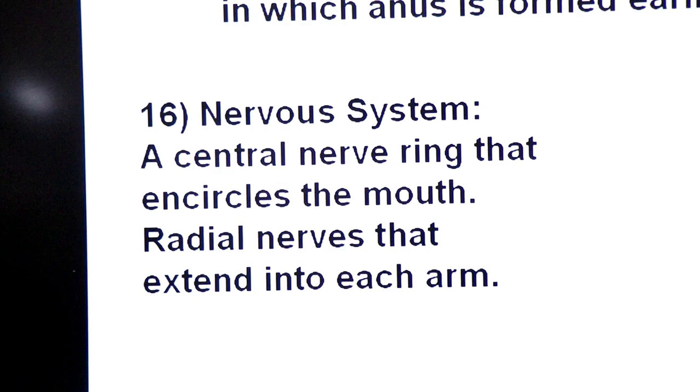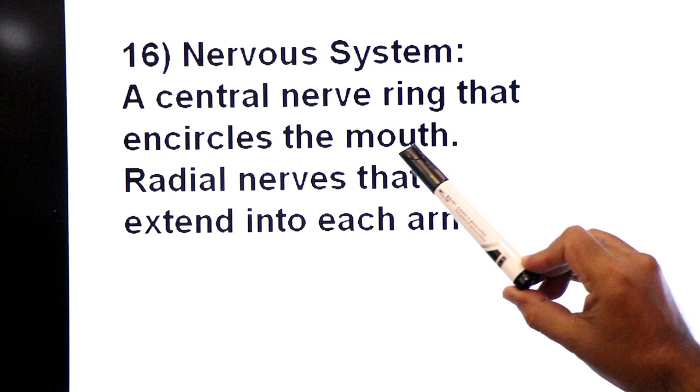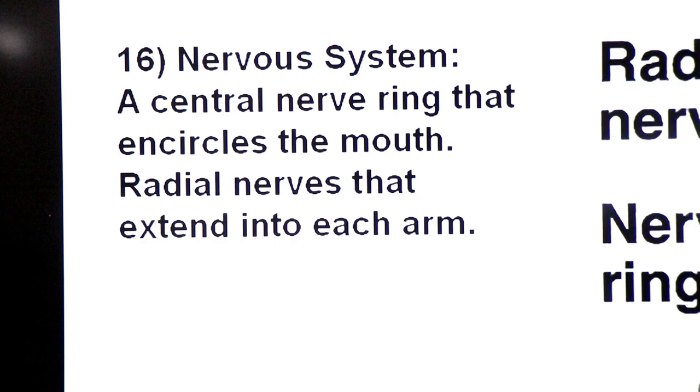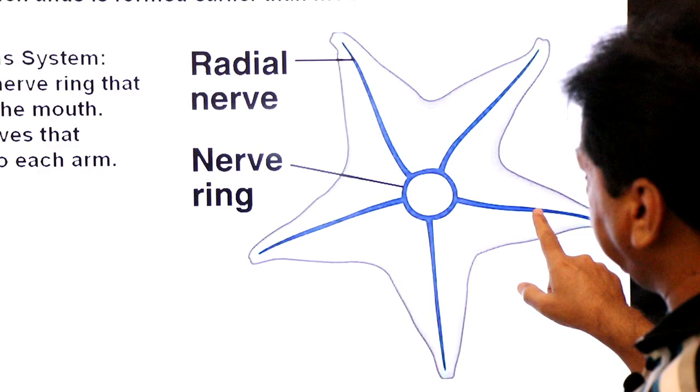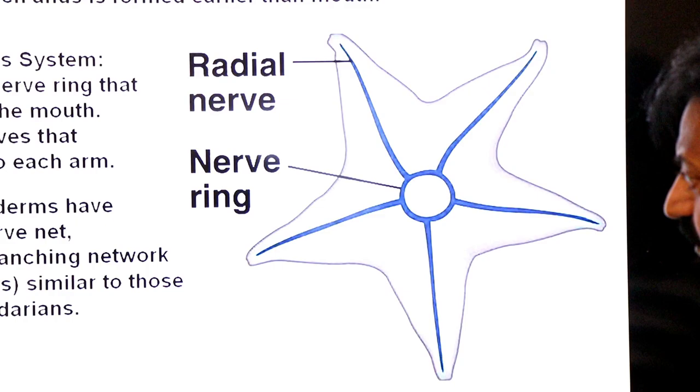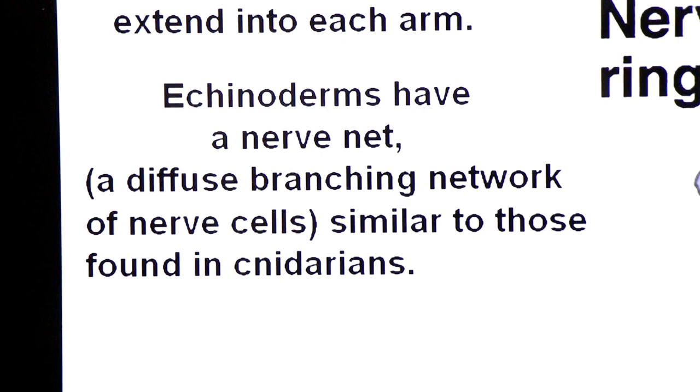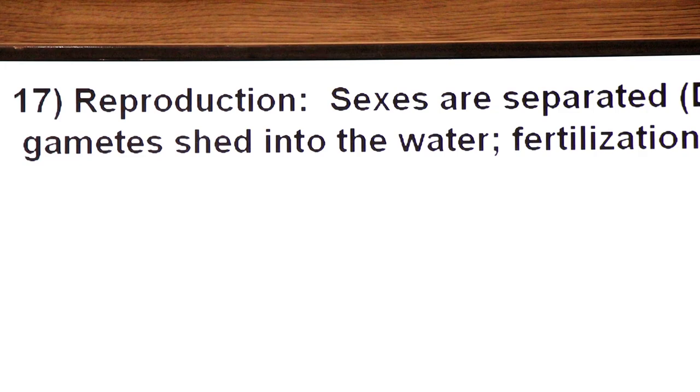Dear students, their nervous system is diffuse type. A central nerve ring that encircles the mouth and radial nerves that extend in each arm. Each goes to one arm. Echinoderms have a nerve net, a diffuse branching network of nerve cells similar to those found in cnidarians.